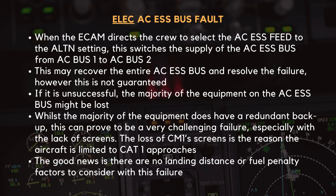When the eCAM directs the crew to select the AC essential feed to the alternate setting, this switches the supply of the AC essential bus from AC bus 1 to AC bus 2. This may recover the entire AC essential bus and resolve the failure. However, this is not guaranteed. If it is unsuccessful, the majority of the equipment on the AC essential bus might be lost. Whilst the majority of the equipment does have a redundant backup, this can prove to be a very challenging failure, especially with the lack of screens.